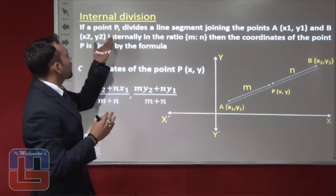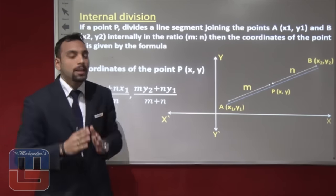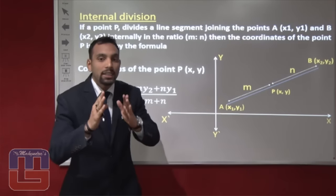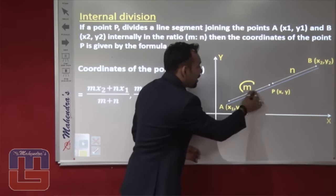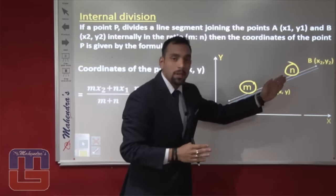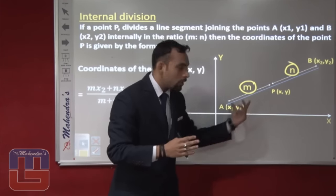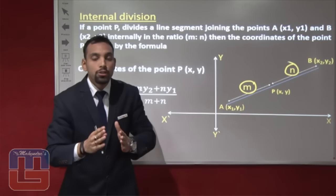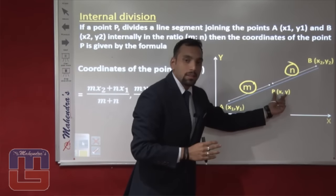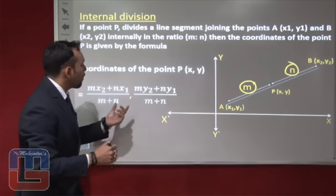You can see internal division: if a point P divides a line segment joining the point A (X1, Y1) and B (X2, Y2) internally in the ratio M:N. That means we have given 2 points A and B and P is a point which divides the given segment in the ratio M:N. So the condition is if we have to find the coordinates of P, that means we have to find the value of X and Y. We will find them with the help of this formula.